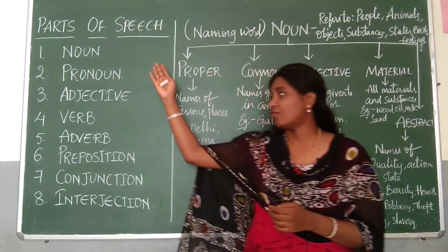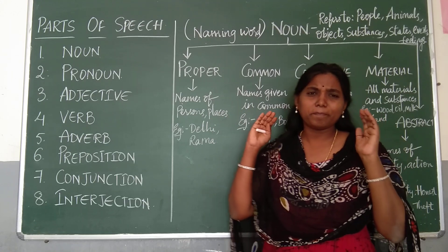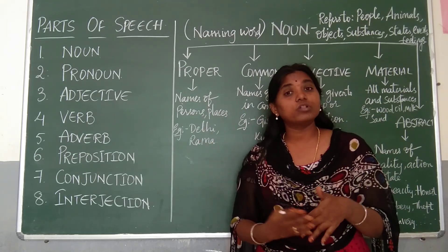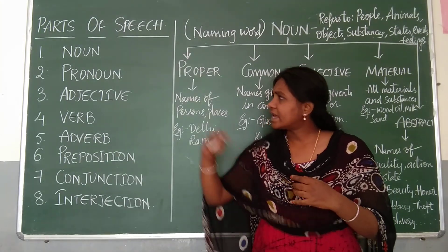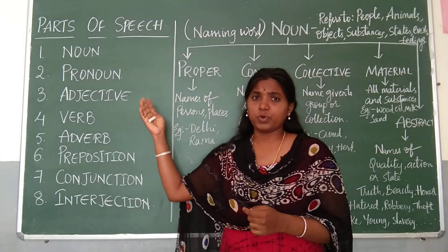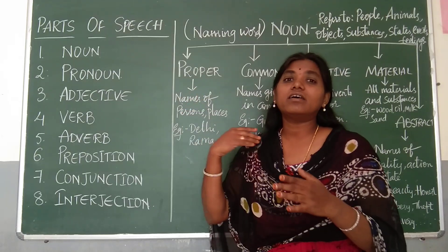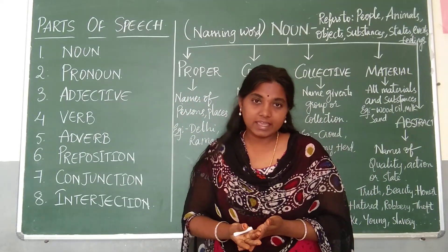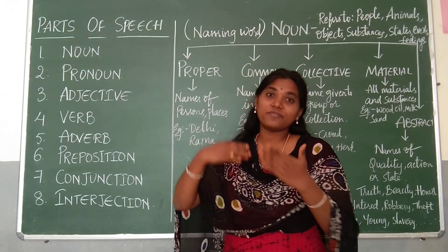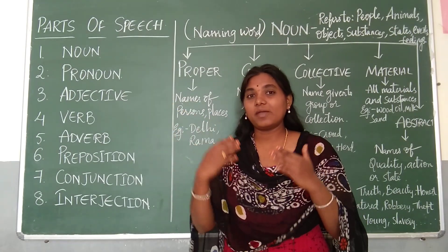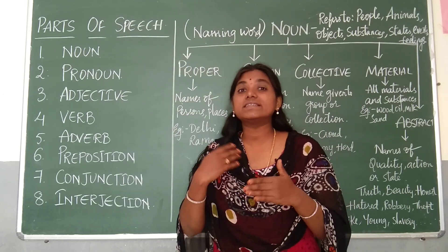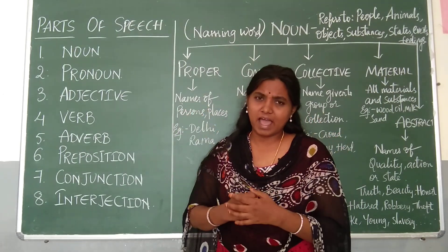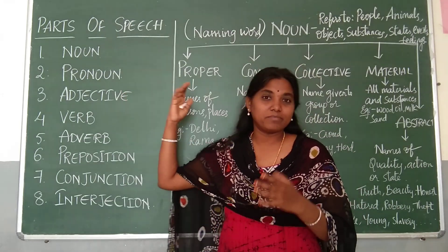You are already aware about what these parts of speech are. Noun is nothing but a naming word. Pronoun is a word used instead of repeating the noun. Adjective qualifies noun and pronoun in a more specific manner. Noun, pronoun, and adjective come into one group.